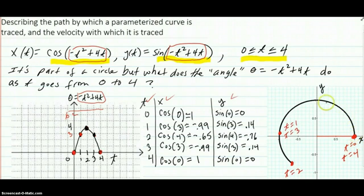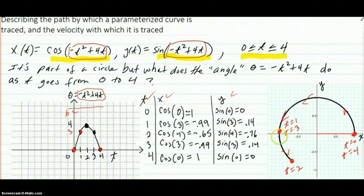t equals 1, you're traversing this way. You're here at t equals 2. You come to a stop and go backwards, back around this way.